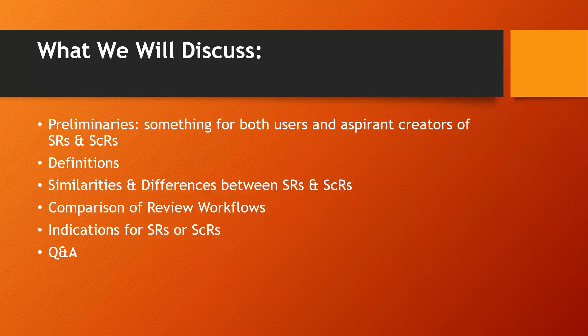We'll be going over definitions, talk about similarities and differences between them, do a comparative review of workflows, and talk about indications for both of these types of reviews. Then the floor is open and I will try to answer your questions as best I can. If I don't have an immediate answer, we'll get back to you. The shorthand here: SR stands for systematic review and SCR stands for scoping review.